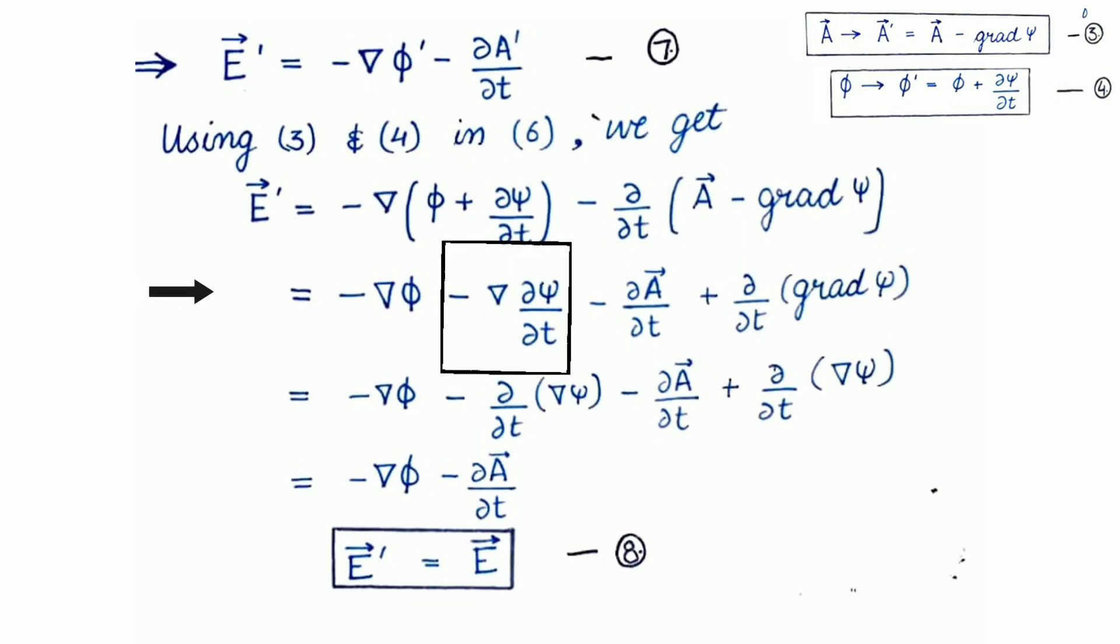Now, see in the second term, we can write this del inside along the psi like del psi upon del t. And here in the last term, we can write gradient as del, so it will become del psi. Now, you can see this second term and the last term are same with opposite sign. So, we can cancel them and finally, we are left with minus del phi minus curly A upon curly t. From equation second, it is equals to E. So, again we can see that E dash now is equals to E.